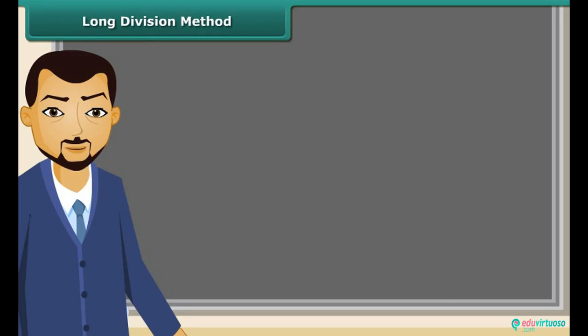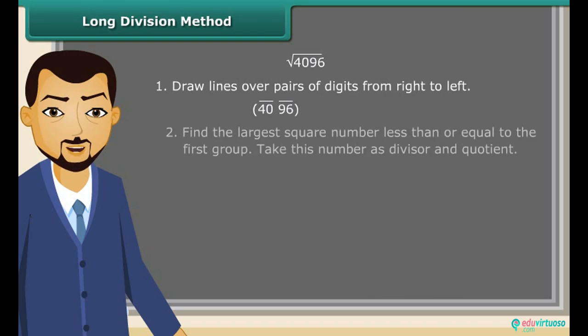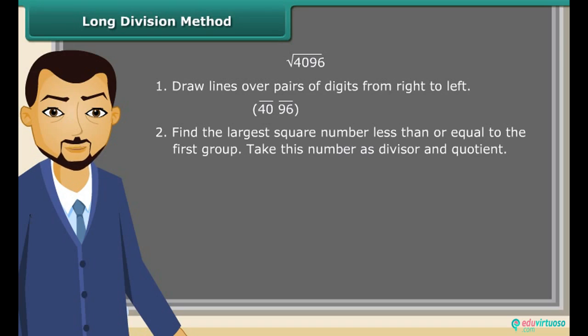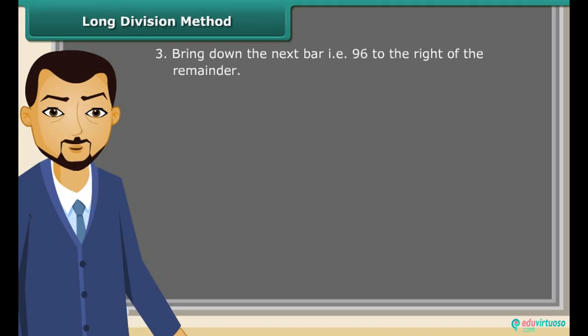For long division method, draw lines over pairs of digits from right to left. Find the largest square number less than or equal to the first group. Since 36 is less than 40 in our example, we take 6 as the divisor and 6 as the quotient. Subtract 36 from 39. After that, bring down the next bar, which is 96, to the right of the remainder. Double the divisor.